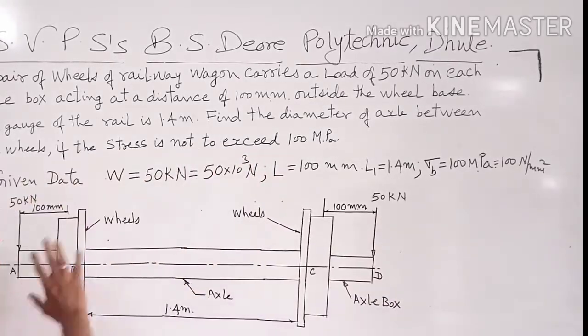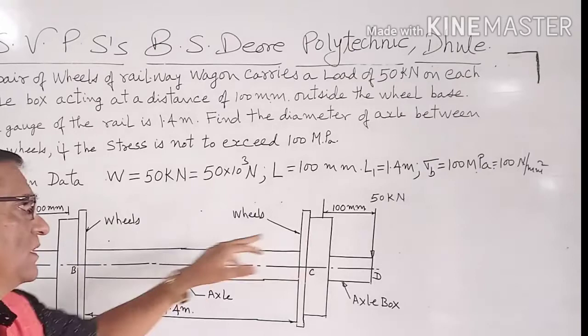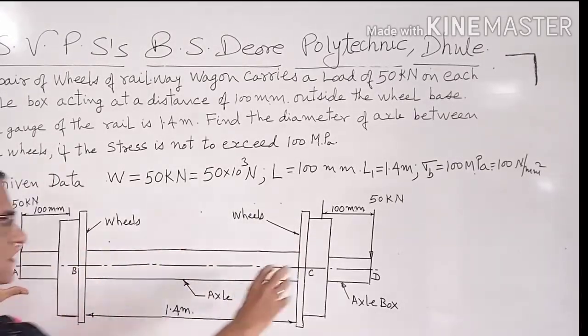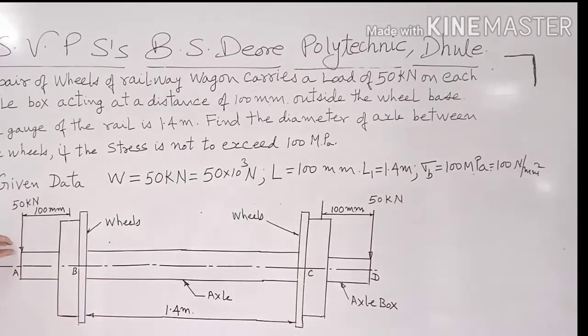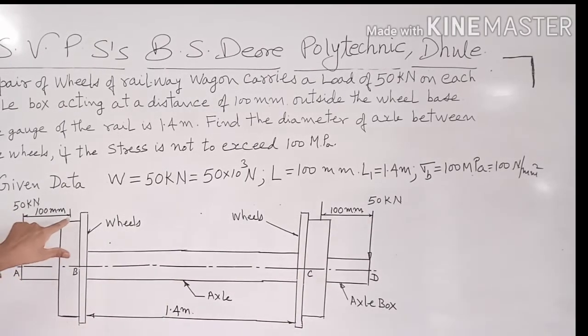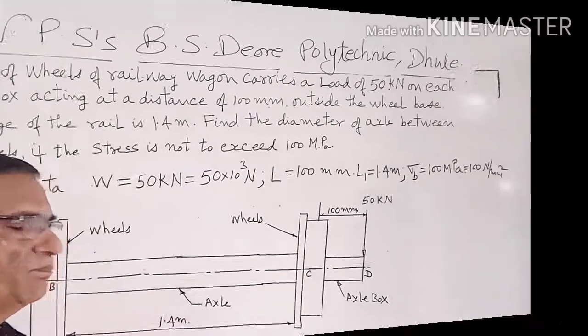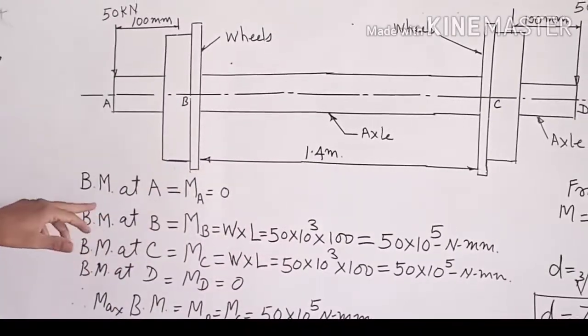So this is the figure. These are the wheels, railway wheels. This is the axle, and these are the axle boxes. Load is acting at this point, 100 mm away from the center of the wheels. And this distance is 1.4 meter.